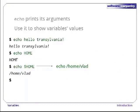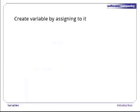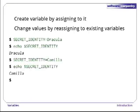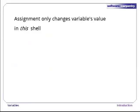Creating a variable is easy — just assign a value to a name using equals. Changing a value is equally easy; just assign a new one. Here, we set our secret identity to be Dracula, check it, change it to Camilla, and check again. It's important to note, though, that assignment only changes a variable's value in the current shell, not in any other shells that are currently running or in any shells that are started later.